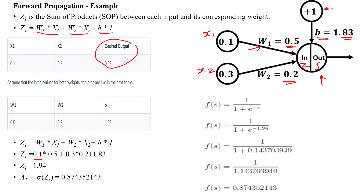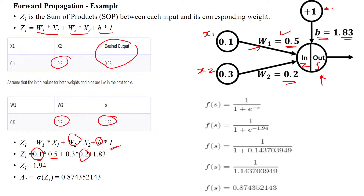W1 is 0.5, X1 is 0.1, X2 is 0.3, W2 is 0.2, and the bias value is 1.83 with bias input of 1. When you substitute all these values, you get G1 = 1.94.